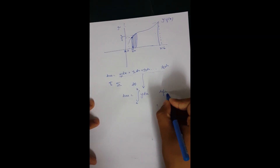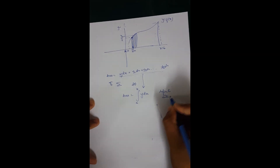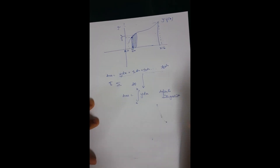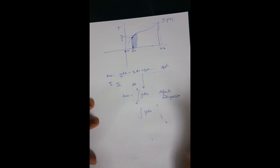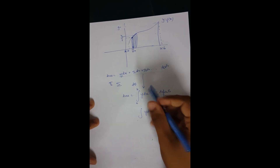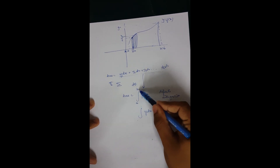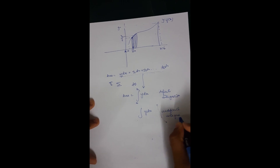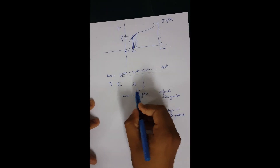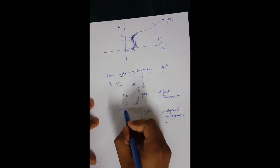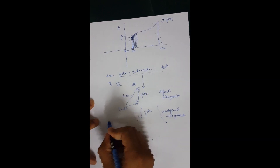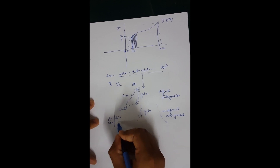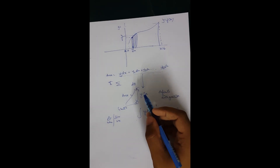Integration is the opposite of differentiation — where differentiation deals with the small, integration denotes the big sum. This is definite integration. If we just write the integral of y dx without the boundary points, it's called indefinite integration. The boundary values a and b are called limits of integration — but don't confuse these with the limits we discussed earlier. They have the same name but are different concepts.